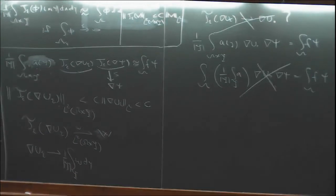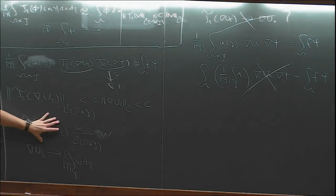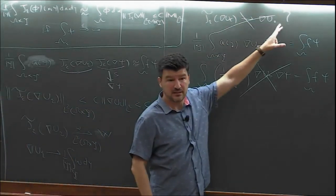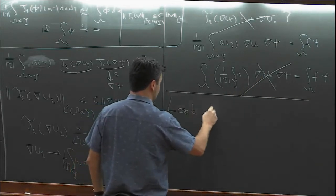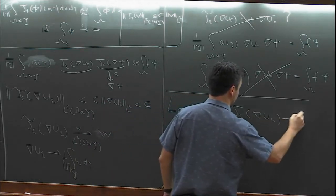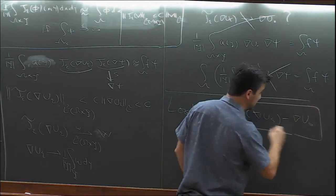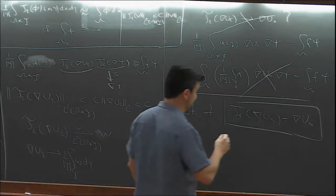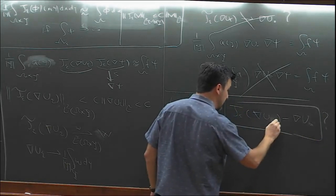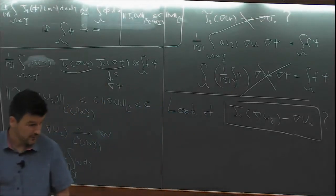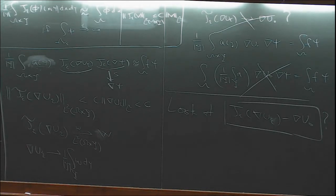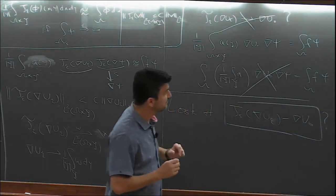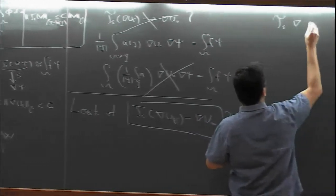If that's not true, you go back to square one, or you can say: if it doesn't converge to ∇u₀, then it makes sense to look at the difference T_ε(∇u_ε) minus ∇u₀, and see what's going on.